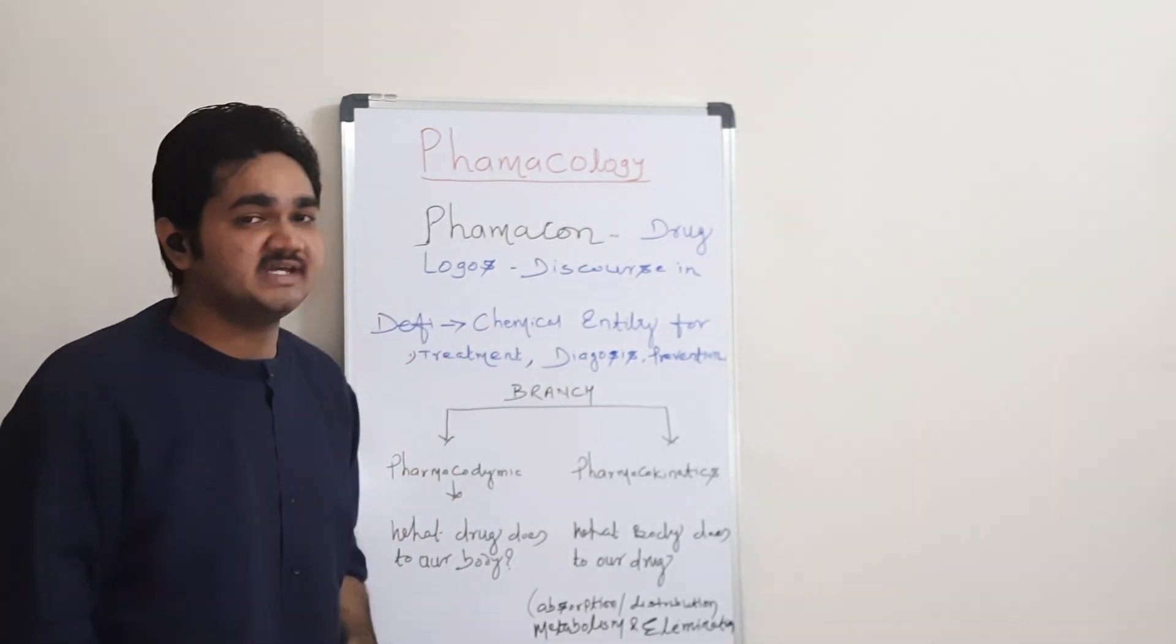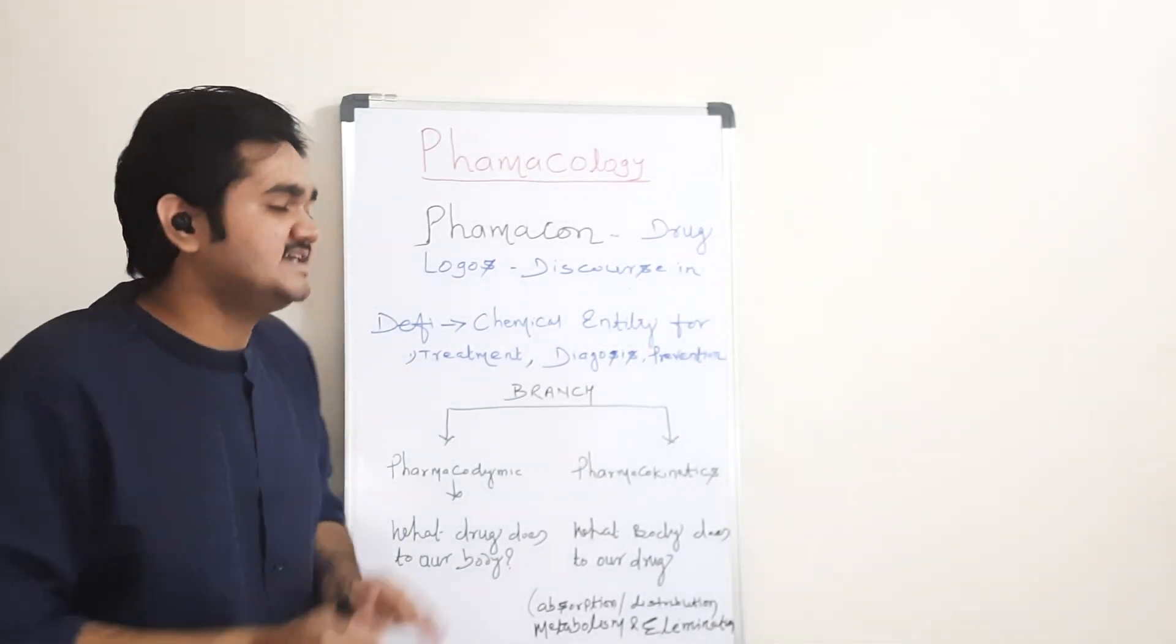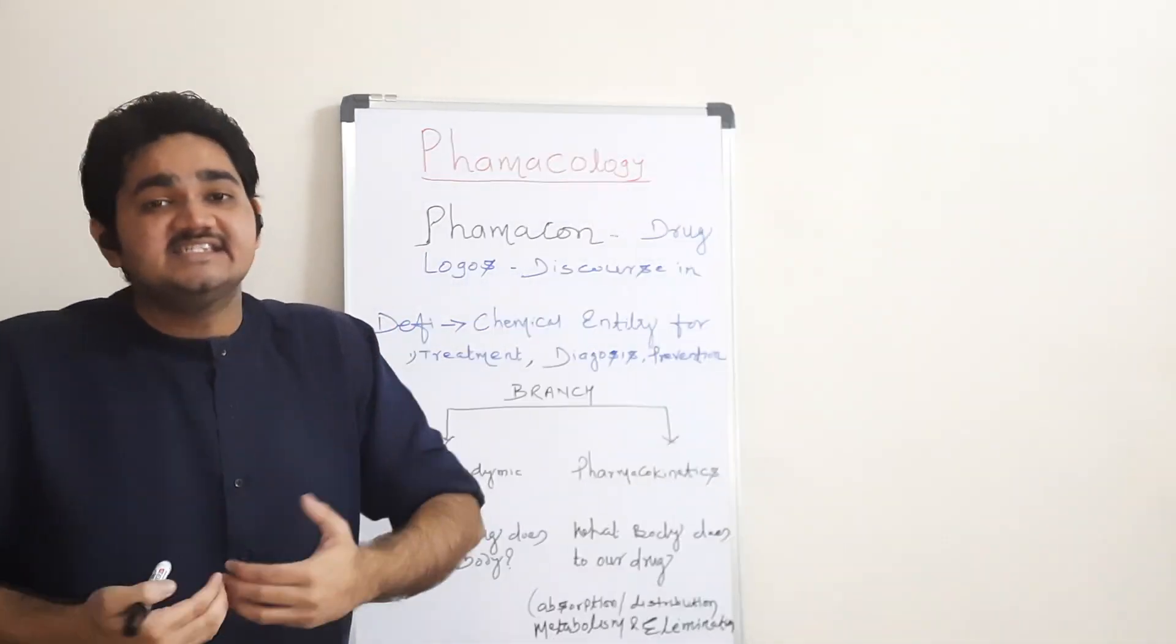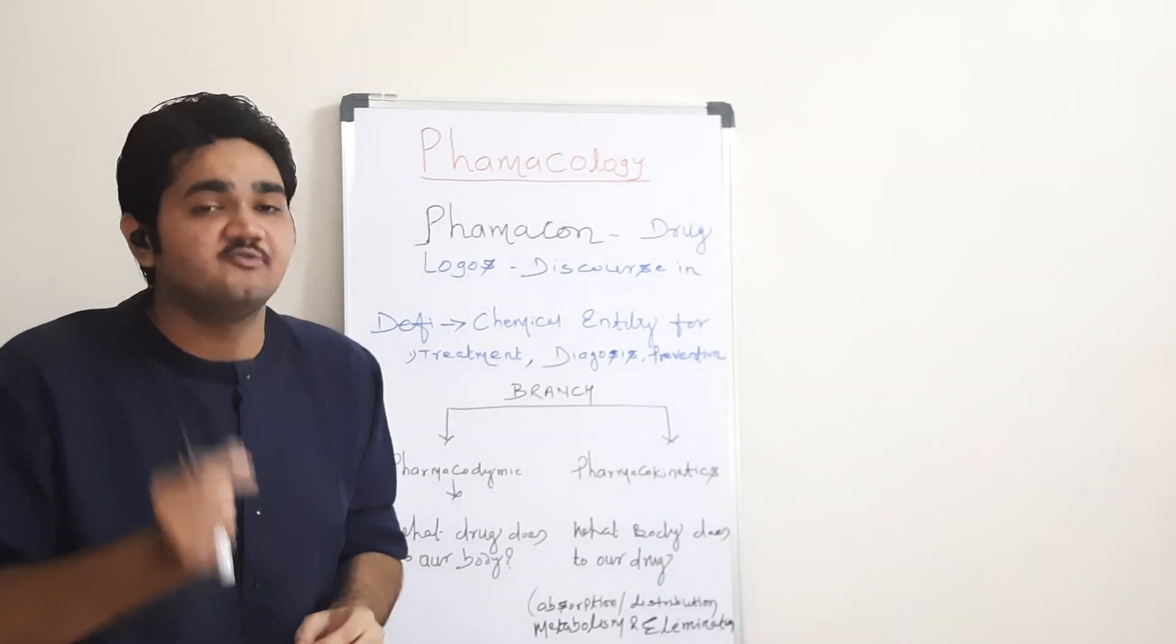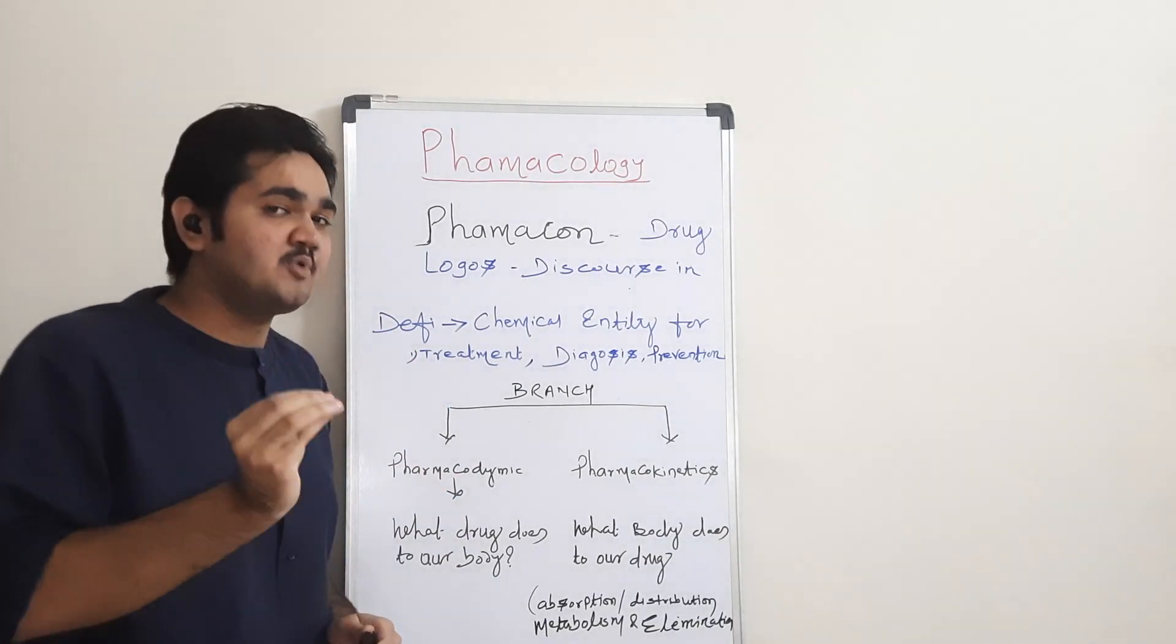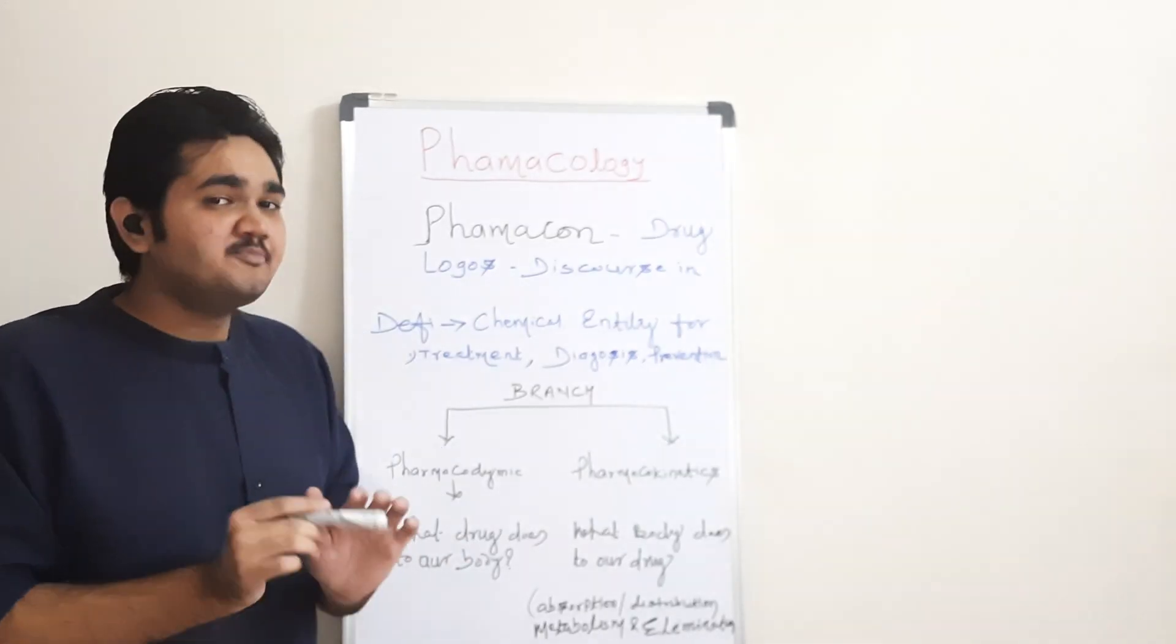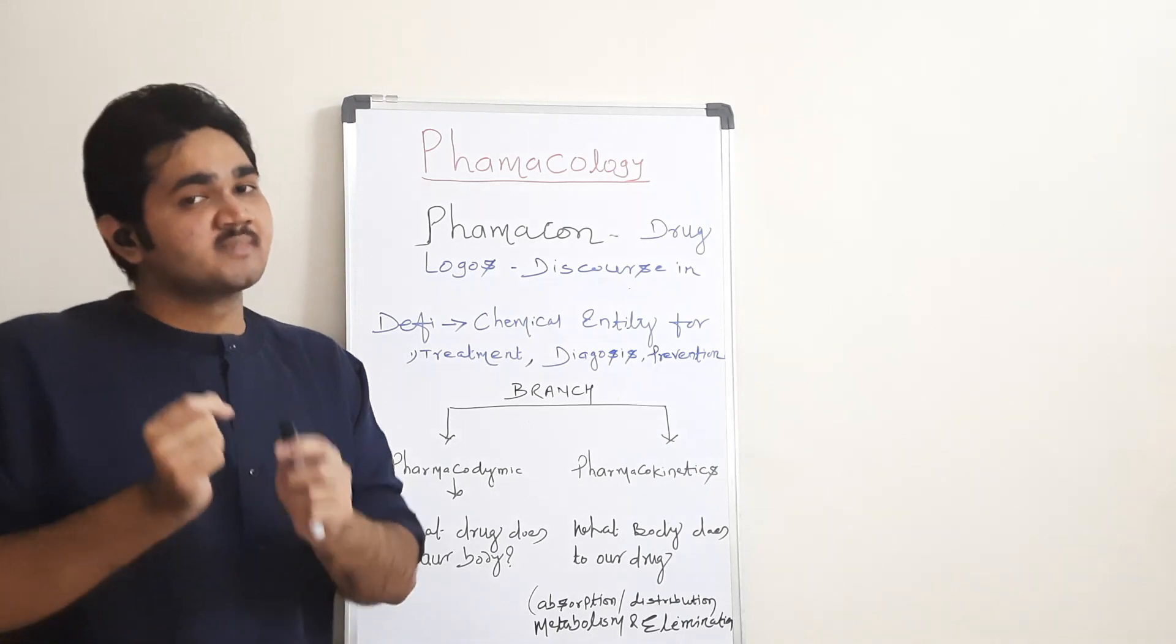If I try to define pharmacokinetics in one sentence, it simply means what the body does to our drug. What did my body do to the drug? That is known as pharmacokinetics. In pharmacokinetics, we mainly focus on four important things: absorption, distribution, metabolism and elimination of that drug. This process in short form is also called the ADME process.